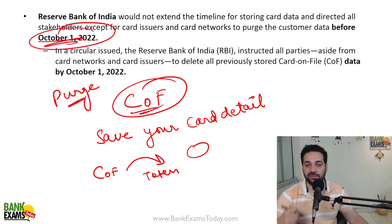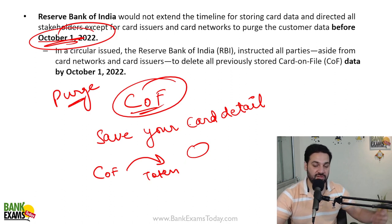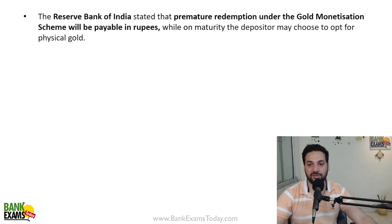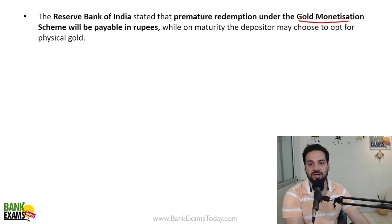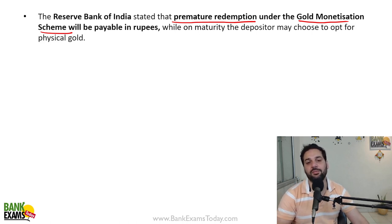All card data had to be deleted by the deadline for safety of depositors. Under the Gold Monetization Scheme, RBI brought in premature redemption — you can redeem your gold in rupees or in physical gold format, so you can opt for either cash or physical gold.